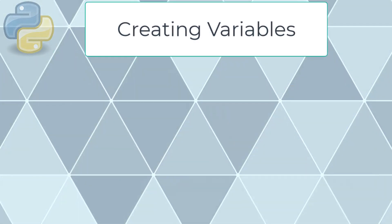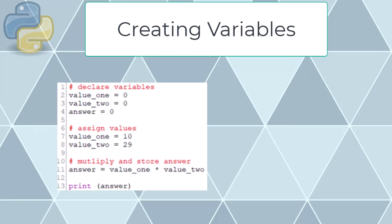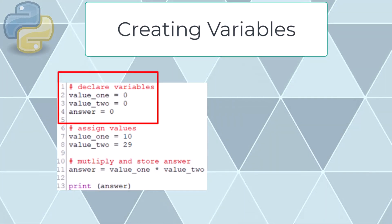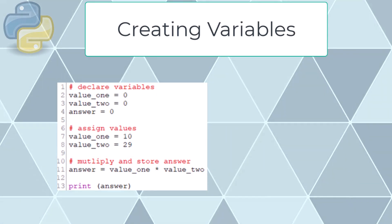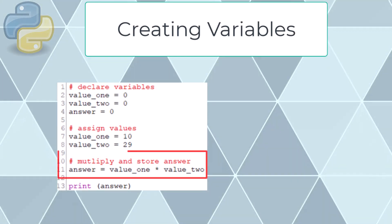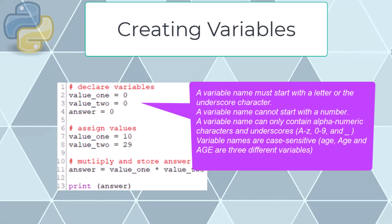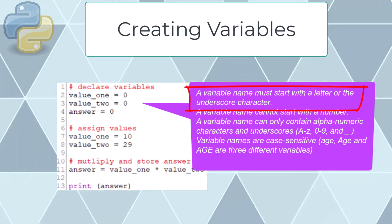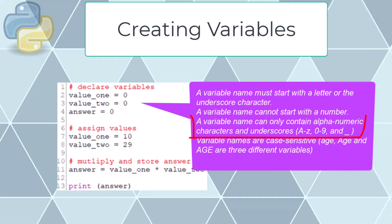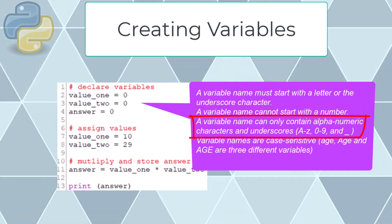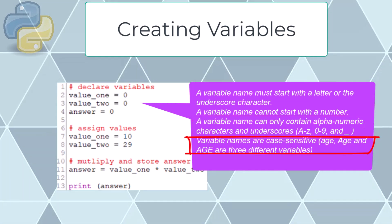To create variables in Python you simply declare them along with their corresponding values. It is good practice to declare them first and then assign values later. Variables are declared, assigned values, and then used in calculations with results output. When naming a variable: it must start with a letter or underscore, cannot start with a number, can only contain alphanumeric characters and underscores, and variable names are case sensitive — for example, 'age' and 'Age' are different.